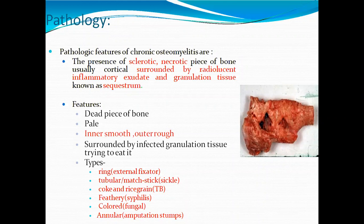The dead pieces of bone — the sequestrum — are observed to have a pale color, with an inner smooth surface and an outer rough surface with rough canaliculi. The dead pieces of bone are surrounded by infected granulation tissue that attempts to resorb them.